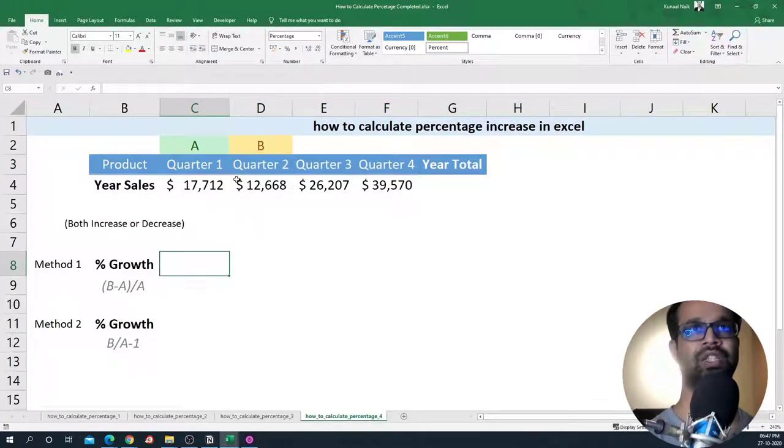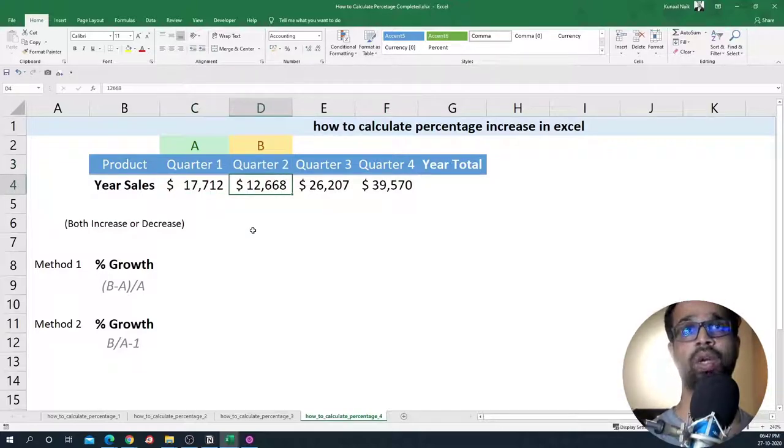So first let's look at the quarter one to quarter two increase or decrease. Now in quarter one we made 17k sales and in quarter two we made 12k sales, which means that we have reduced from quarter one to quarter two sales.